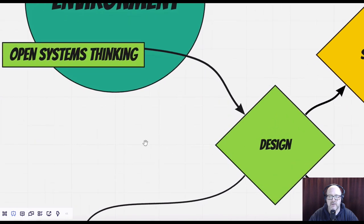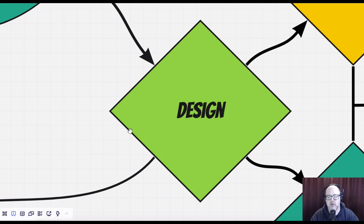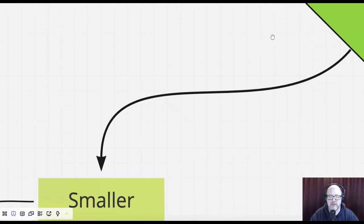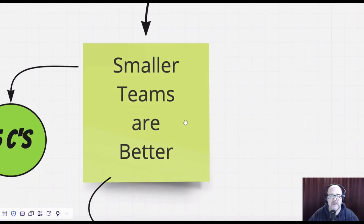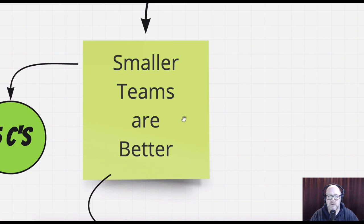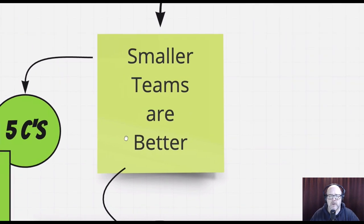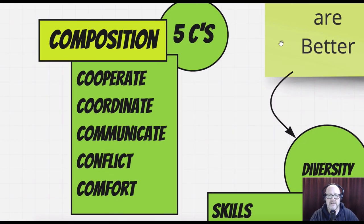The next thing I want to draw your attention to is design and how we put together our teams. The first thing to think about is that smaller teams are better. We don't want our teams to be too large — into the double digits. Studies indicate that single-digit team members make a team more effective, speed up the time it takes to build cohesion and trust, and smaller teams also respond better in a crisis. When building smaller teams, there's the idea of the five C's and the composition of our teams. That's why it's called the five C's — five composition pieces.